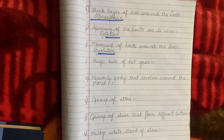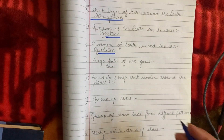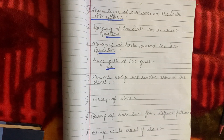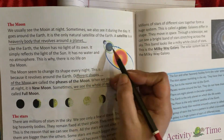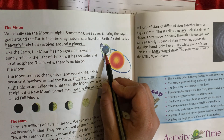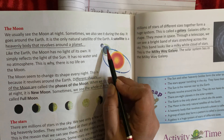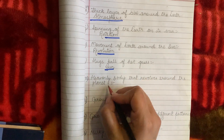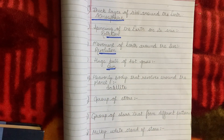A huge ball of hot gases is known as sun. Heavenly body that revolves around the planet is a satellite. This is the earth — it is revolving around the sun. Everything that revolves around the sun is a planet. Moon is revolving around the earth. Everything that revolves around the planet is known as satellite. So moon is a satellite.